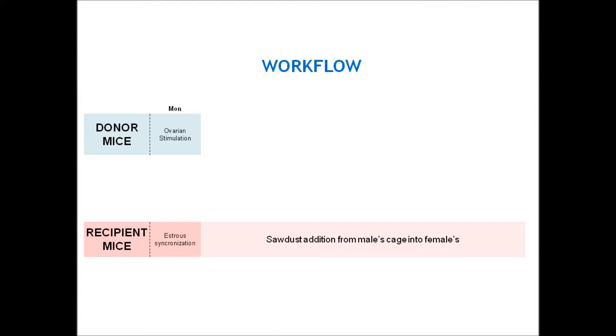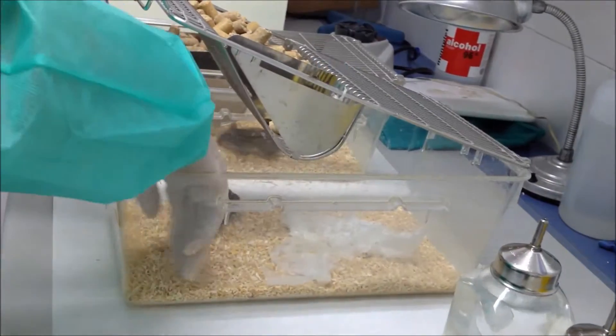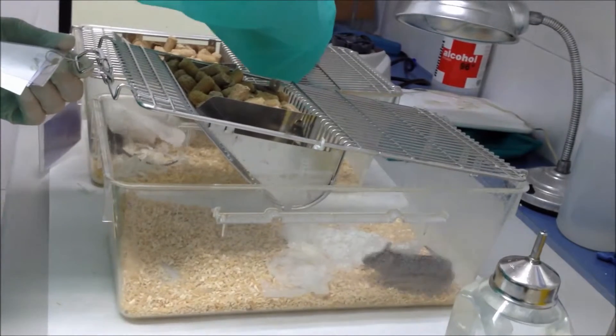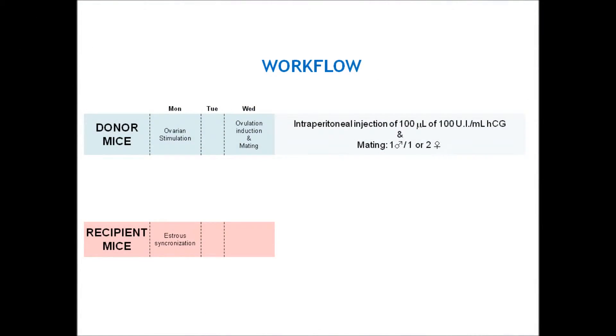Also on Monday, put some of the bedding from the male's cage into the female's cage in order to induce synchrony in the estrous cycle. Two days later, on Wednesday, the procedure consists in the ovulation induction and mating.